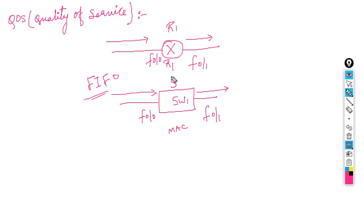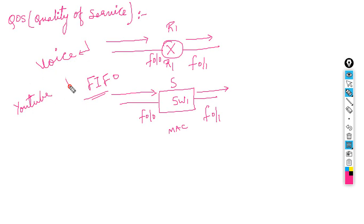As we know, voice calls and video calls are very important compared to other traffic. For example, someone in your organization is watching YouTube or Facebook, and there is an important conference going on in your meeting room. Which traffic will you give priority to? You will give priority to your video conference — more priority to that one. And the guy who is watching YouTube gets low priority. But by default the router, switch, or firewall will not do that — whoever comes first in, they leave first out. That is FIFO.